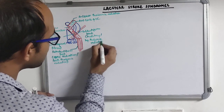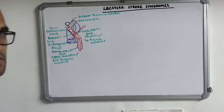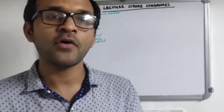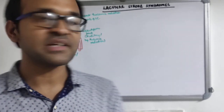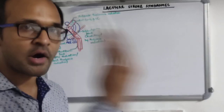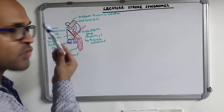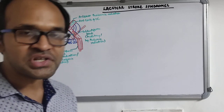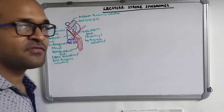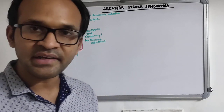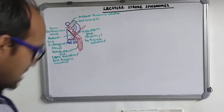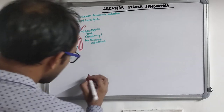To summarize, the internal capsule consists of five parts: anterior limb (anterior thalamic radiation with thalamocortical fibers), genu (corticonuclear fibers), posterior limb (corticospinal fibers for upper limb, trunk, and lower limb), retrolentiform part (optic radiation), and sublentiform part (auditory radiation). Now we'll talk about the blood supply - but before that, I'll draw the circle of Willis.